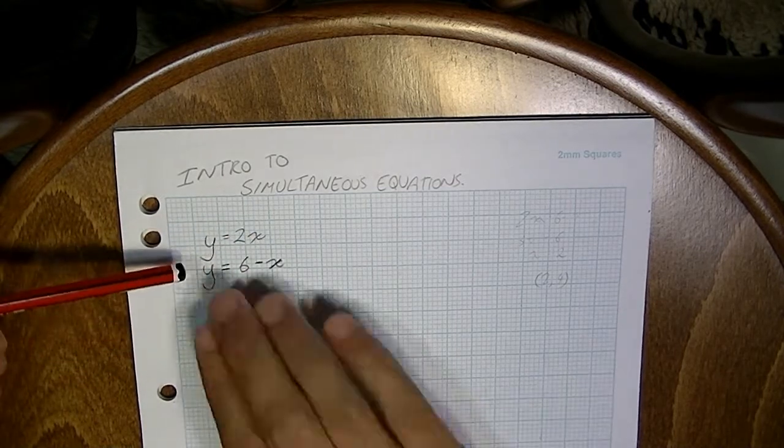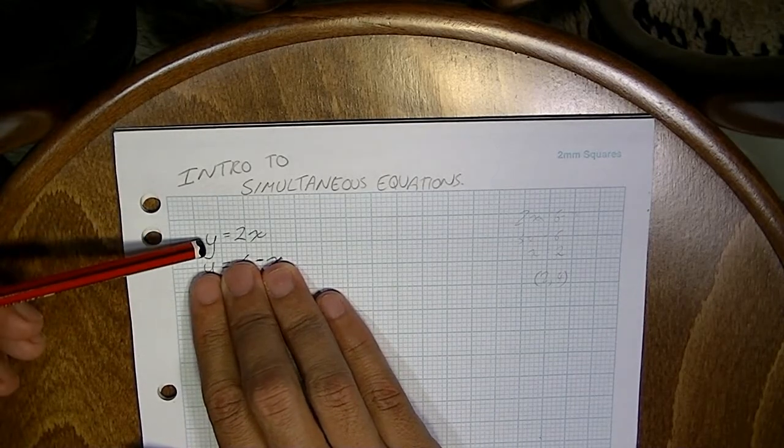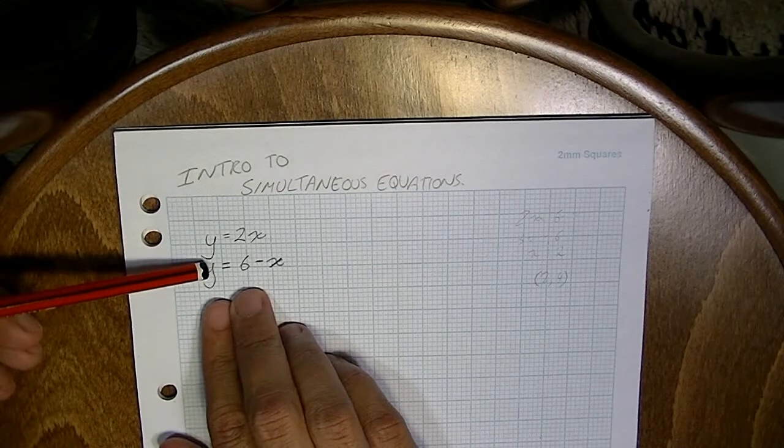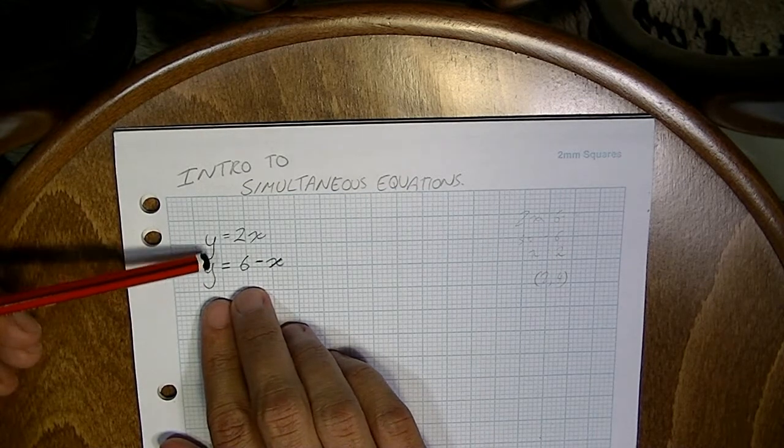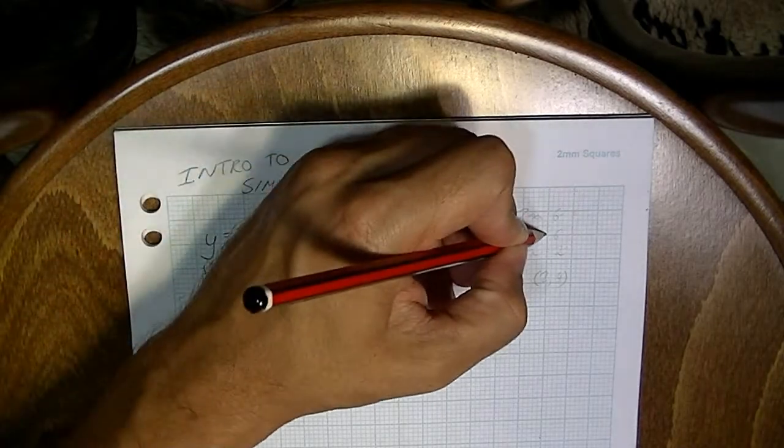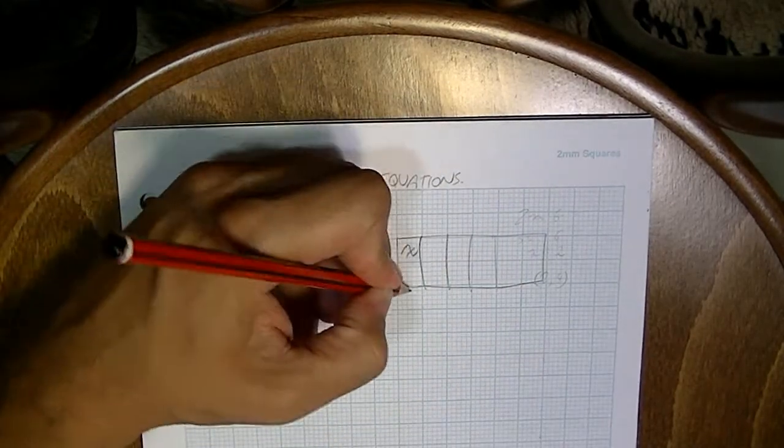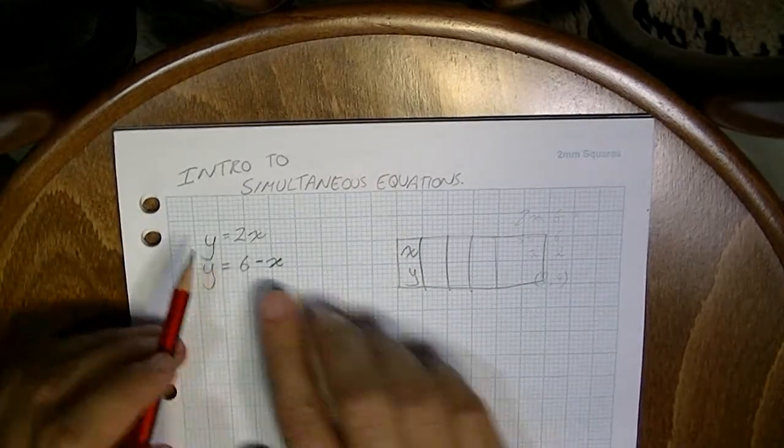Now, for example, remember these equations are simply graphs. You can graph y equals 2x and you can also graph y equals 6 minus x. I'm not going to graph them just yet, but you should also remember that you can create something like this, x, y, and we can come up with,